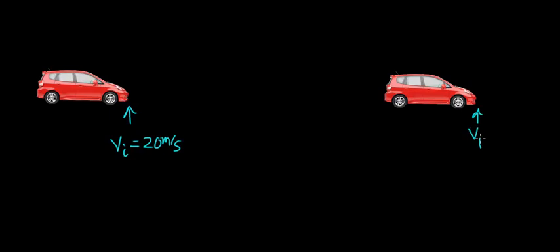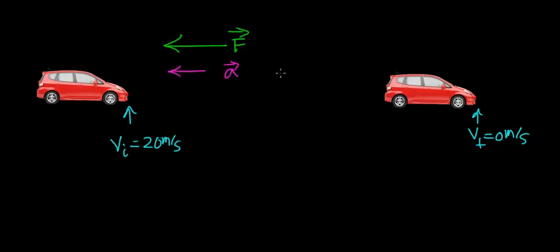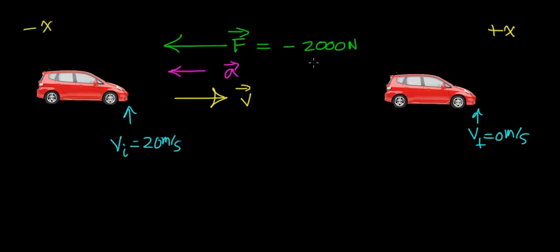Now let's look at what it means to do negative work on an object. We'll do the previous problem in reverse: the car initially has a velocity of 20 meters per second, and we want to apply a force to bring it to a stop. From Newton's second law, to slow down an object we must apply a force in the opposite direction of its motion. This force will be a negative 2,000 newton force, directed in the negative x direction, opposite to the car's velocity, causing the car to decelerate.